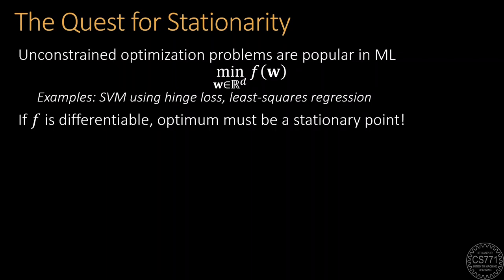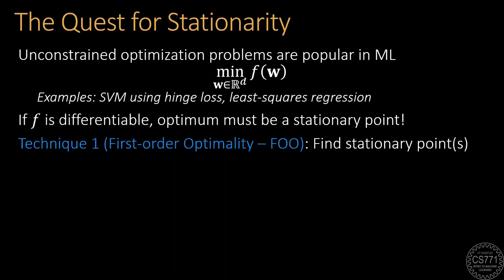If the objective is differentiable, then calculus tells us that the solution must be a stationary point, which gives us our first optimization technique, the first order optimality method. In this technique, we simply search for all stationary points of the objective function and inspect each one to see which one is the global optimum.